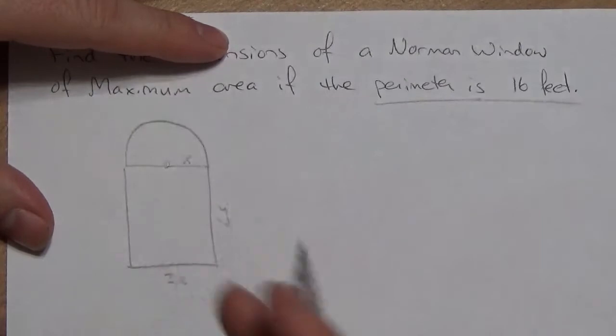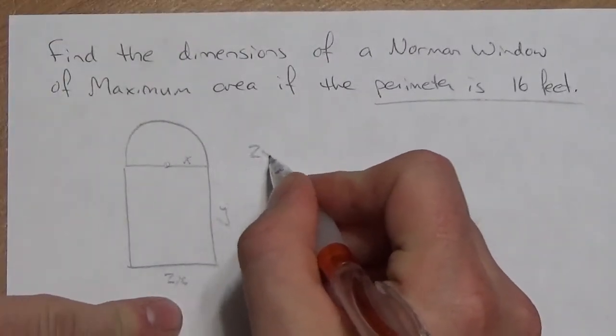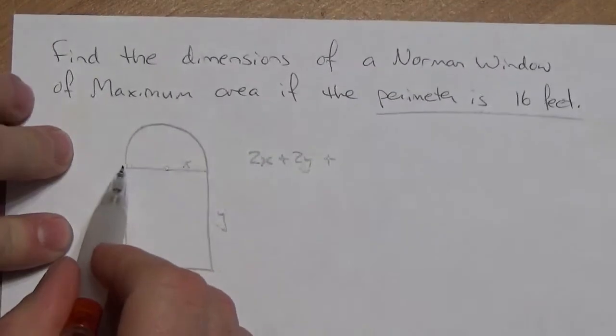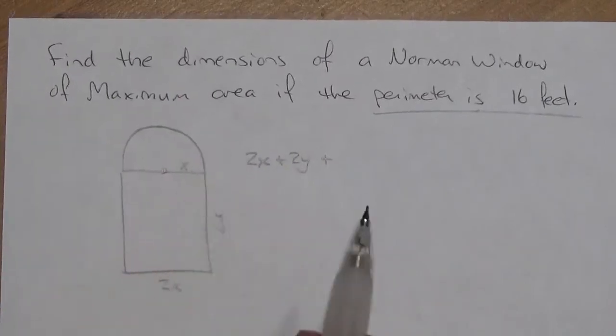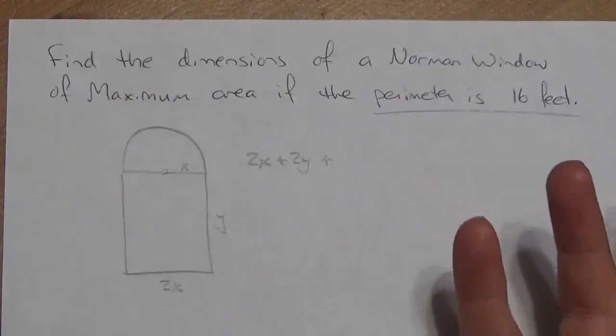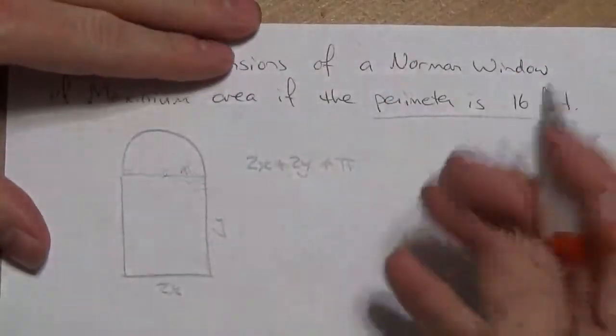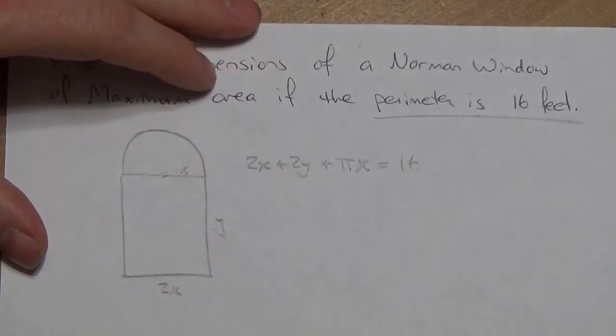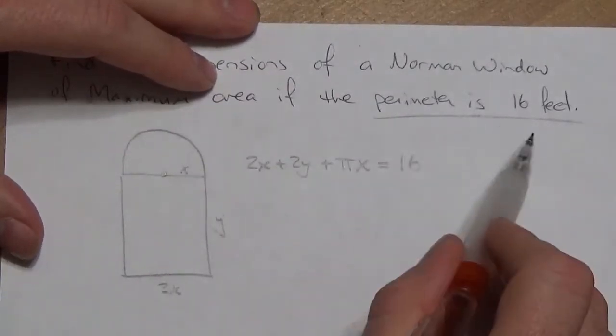I do know that the perimeter is supposed to be 16. So, I know that if I take 2x and add 2y's, one for each side, plus the distance, basically half the circumference of the circle, because there really is only half the circle here. The circumference of a circle would be 2πr. This is going to be half of that, so just πr. And I very specifically chose x to be the radius, so there we go. That's going to equal 16.